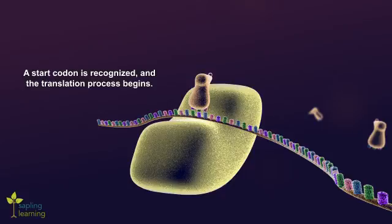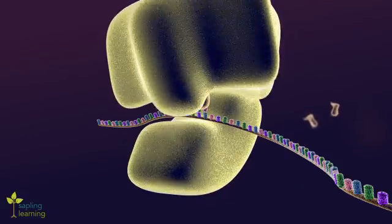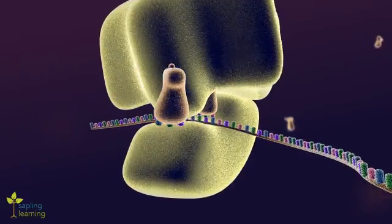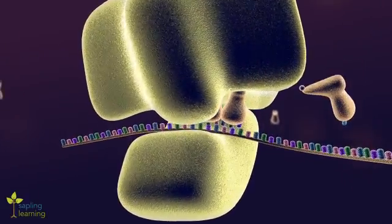This tRNA carries methionine, or MET for short. Once this tRNA has bonded to the mRNA, the large ribosomal subunit bonds. A tRNA with the correct anticodon bonds to the second mRNA codon. The process continues.